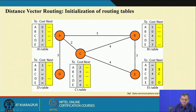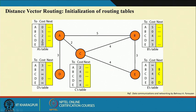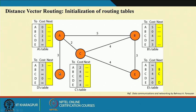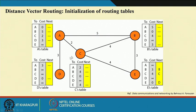Initially, looking at A's table: A to itself is 0, A to B is 5 because directly connected, A to C is 2, A to D is 3, and A to E is infinity because it does not have any information about E — it is not directly connected. D only knows that to reach itself is 0, reaching A is 3 (directly connected), but reaching any other network or router is infinity.